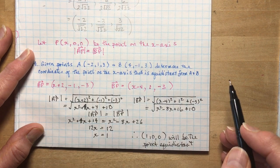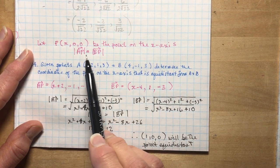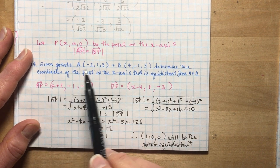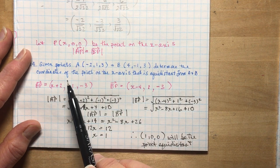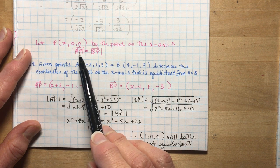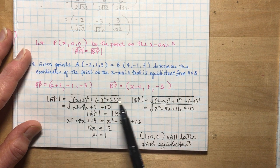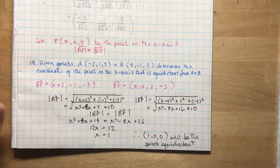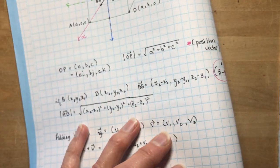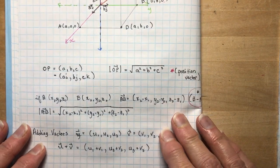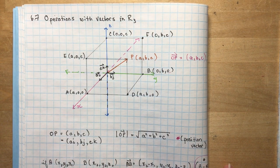It looks much harder than it is. Once you've set up the statement — the magnitudes have to be equal to be equidistant — you find the position vectors AP (P minus A) and BP (P minus B), set their magnitudes equal to each other, and you've got the answer. Hope that helps you for section 6.7. The next lesson will be on spanning sets. See you later — don't forget to subscribe!